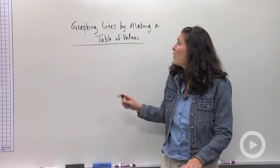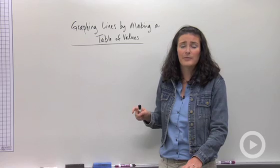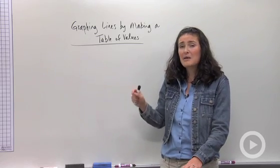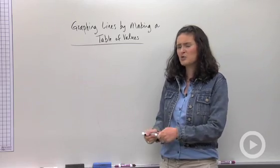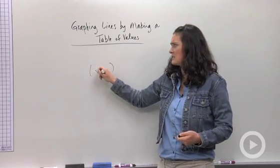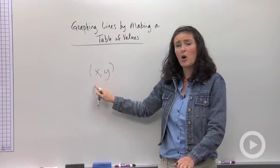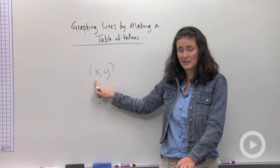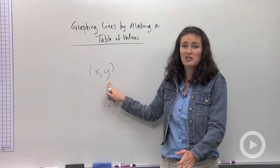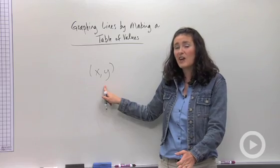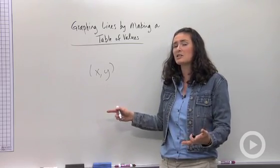But let's check it out for lines. When you want to graph a line by making a table, keep in mind any point represents a solution to the equation. And here's what I mean. Every point has an x number and a y number. When I input an x number into my equation, my y value is my output. So any point that's on the line is a true solution to that equation.